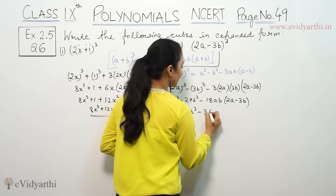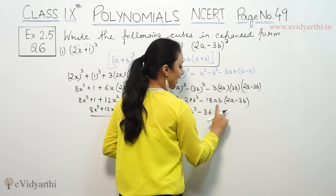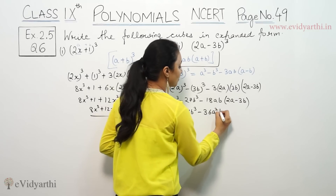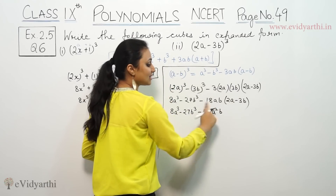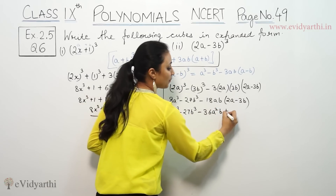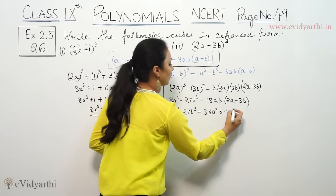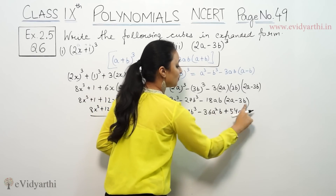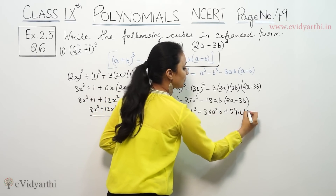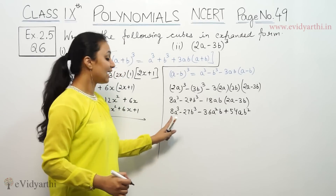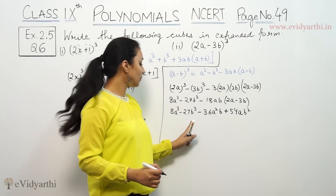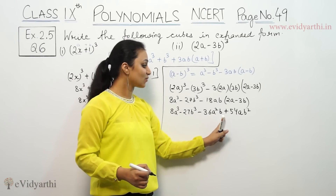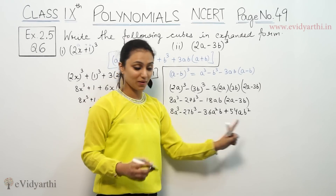Then 3ab gives us: 18a squared b — a into a is a square. Of minus 9, plus, so we leave three terms: 54ab square, b into b is b square. So the final answer is: 8a cube minus 27b cube minus 36a squared b plus 54ab squared.